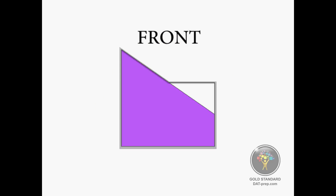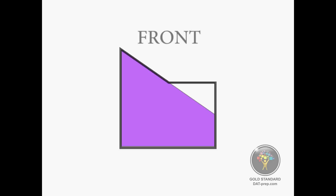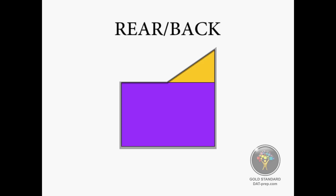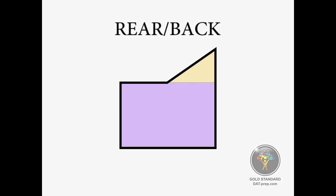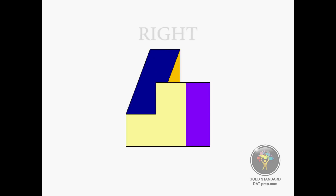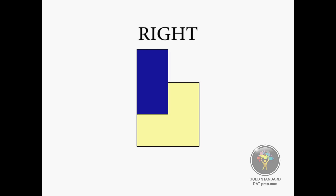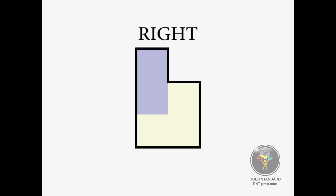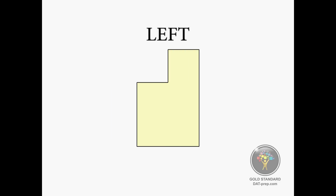The front view is usually the side of the object where all essential parts are most visible. Its opposite side is the rear or back view, with the identical outline as the front view. Then there is the right side view, outlined here in black, and its opposite, the left side view, with the identical outline as the right side view.